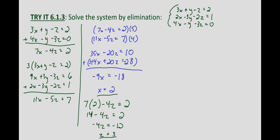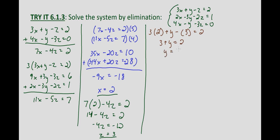So we have x = 2 and z = 3, and now we can solve for y. Using the first original equation with x = 2 and z = 3: 3(2) + y - 3 = 2, so 6 - 3 + y = 2, giving 3 + y = 2, which gives us y = -1. So our ordered triple solution, at least tentatively, is (2, -1, 3).